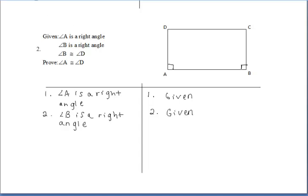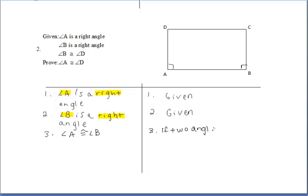So we're writing down our givens again. Angle A is a right angle. Angle B is a right angle. And right there, maybe some of you were thinking this: we can say that angle A and angle B must be congruent. So angle A must be congruent to angle B because if two angles are right angles, then they are congruent.